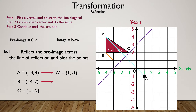Now let's move to vertex B. We've counted one space diagonally, and we need to go another half — so we're one and a half away from the diagonal line. Now let's count one and a half away from the diagonal line on the other side: half, one. We have B prime, which is (−1, −1).